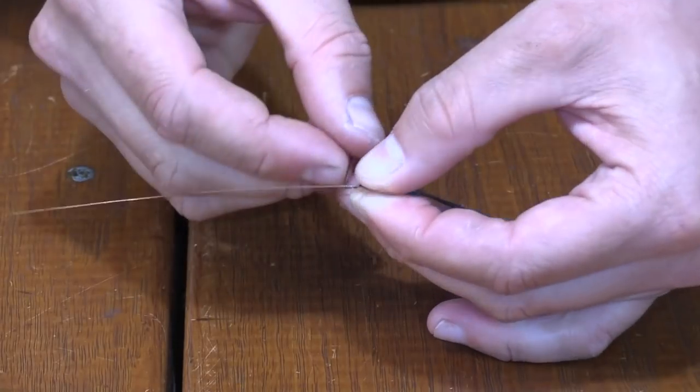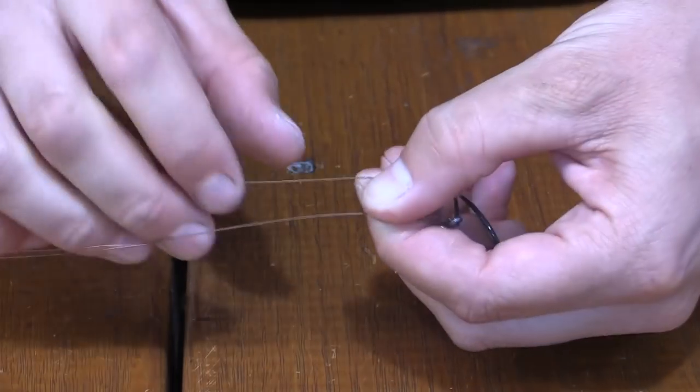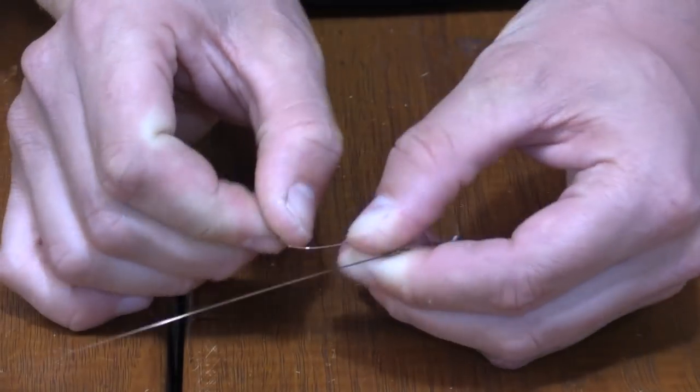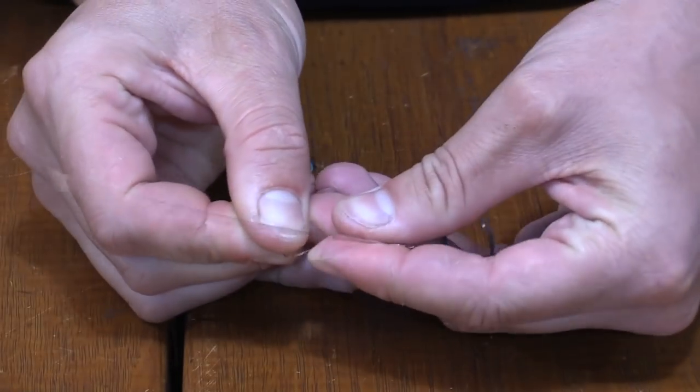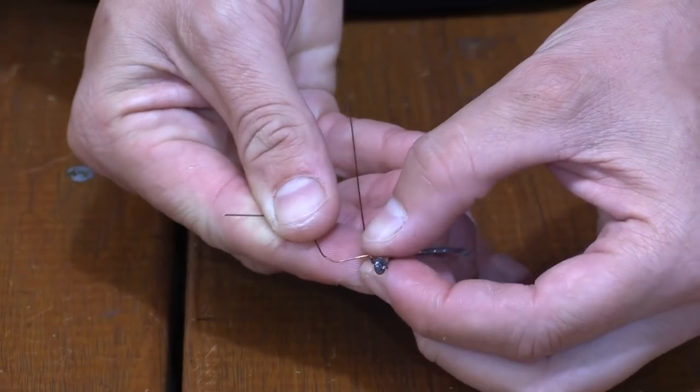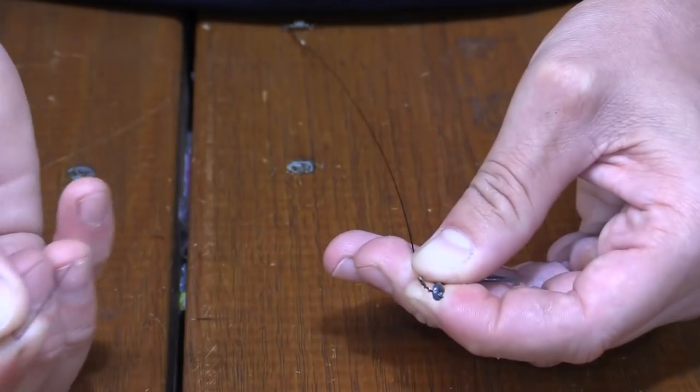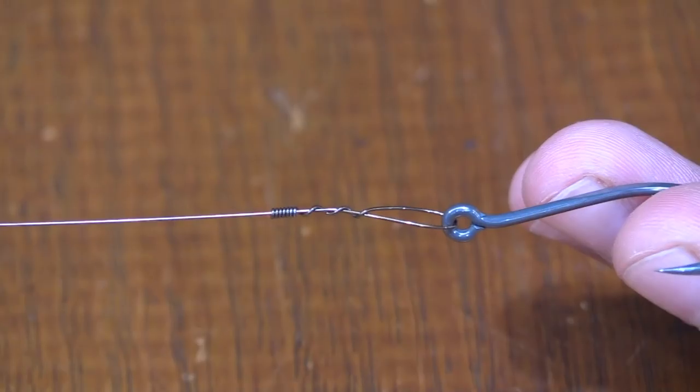Once you've completed that, kink your tagline so it runs parallel to your main line. Kink the other end so it runs away from your main line, all in 90 degree kinks. Then hold your completed twist and use your little crank arm pulling away to snap off your tagline. No excess wire.